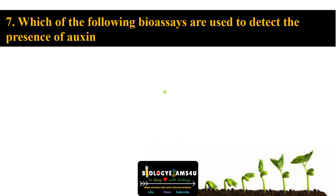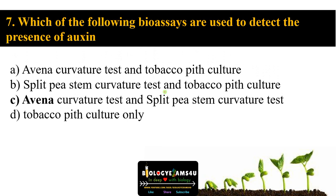Question number seven: which of the following bioassays are used to detect the presence of auxin? Option A Avena curvature test and tobacco pith culture, option B split pea stem curvature test and tobacco pith culture, option C Avena curvature test and split pea stem curvature test, option D tobacco pith culture only. The answer is option C — both Avena curvature test and split pea stem curvature test are for auxin bioactivity. Tobacco pith culture is used for cytokinin bioactivity.